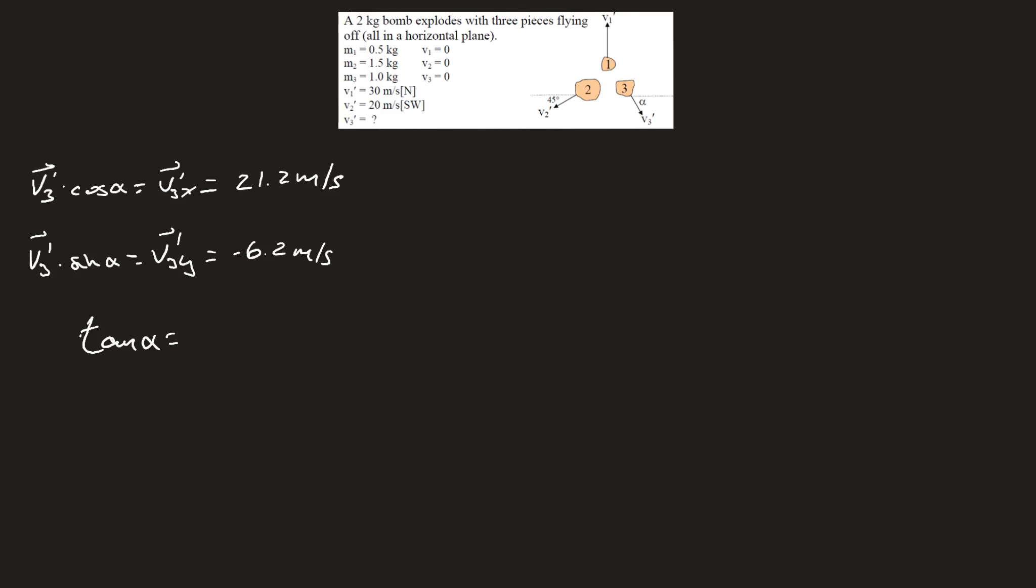So this leads us to get tan alpha, and that's going to be equal to the opposite side, which is the y side, negative 6.2, divided by the adjacent side, which is the x side, 21.2 meters per second. You can solve for alpha, and you end up getting 16 degrees.